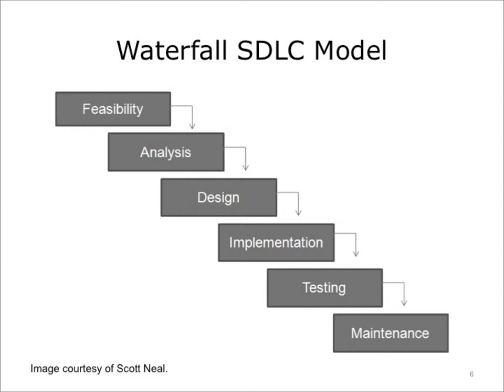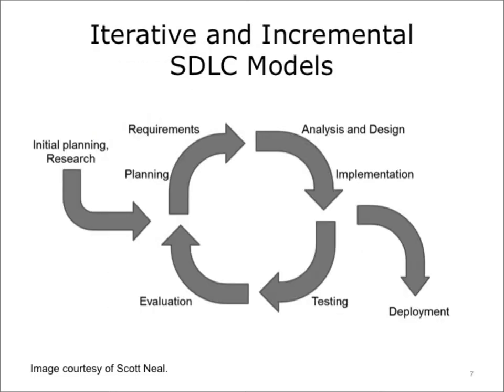Let's take a brief look at how the phases relate to each other. In the waterfall model, the initial assessment of feasibility is followed by analysis, then design, implementation, testing, and maintenance phases — each flowing sequentially. By contrast, the iterative or incremental model starts with initial planning and research, then begins a cycle of planning, requirements, analysis and design, implementation, and testing and evaluation, which repeats as needed until the decision is made to deploy. Now let's discuss what each phase generally entails.